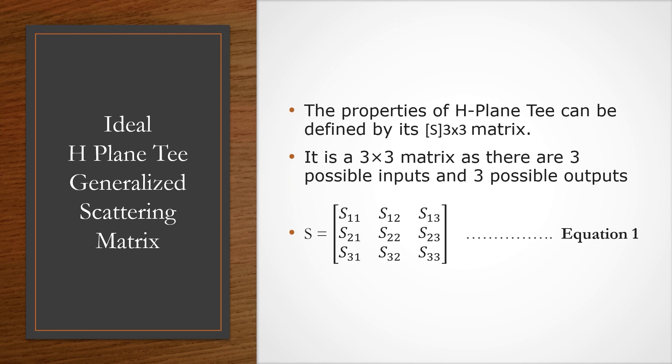This is the ideal H-plane T generalized scattering matrix. For H-plane T there are three input ports and three output ports, so a 3×3 matrix is used. The matrix contains elements S11, S12, S13, S21, S22, S23, S31, S32, S33. This is the generalized equation for the scattering matrix of H-plane T.